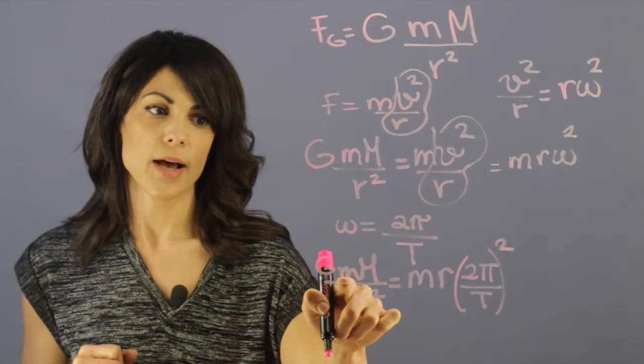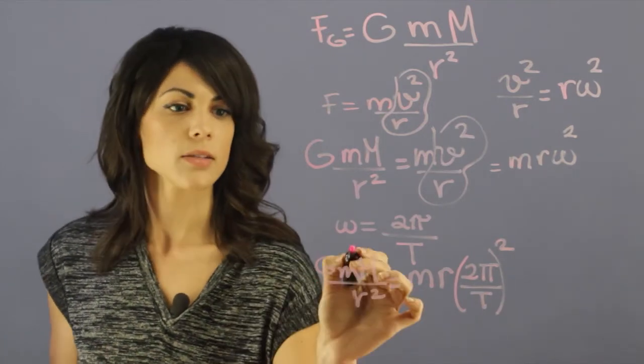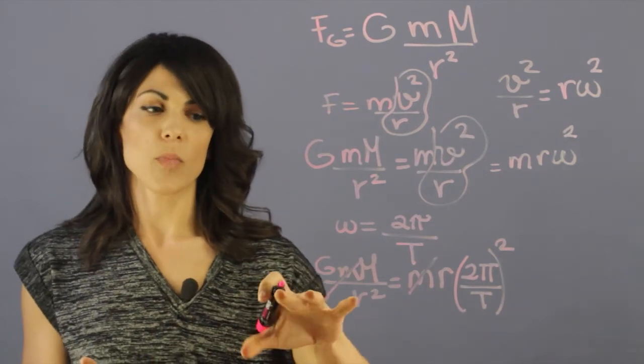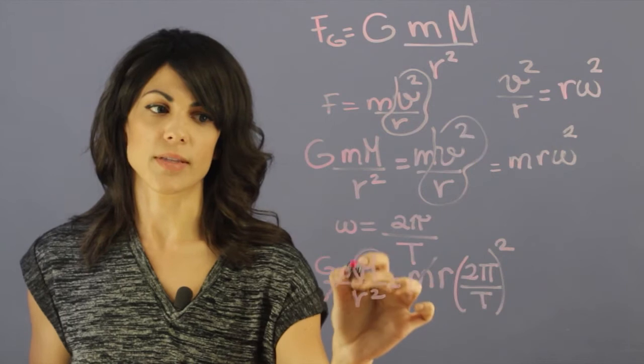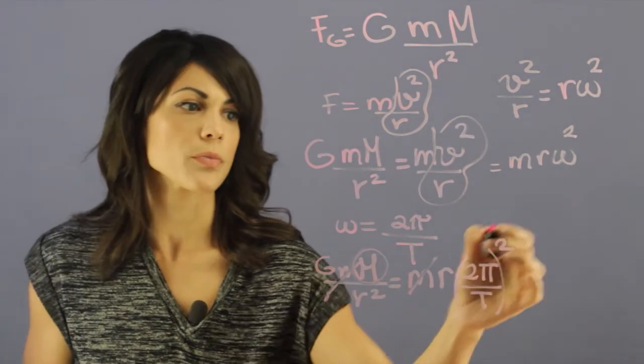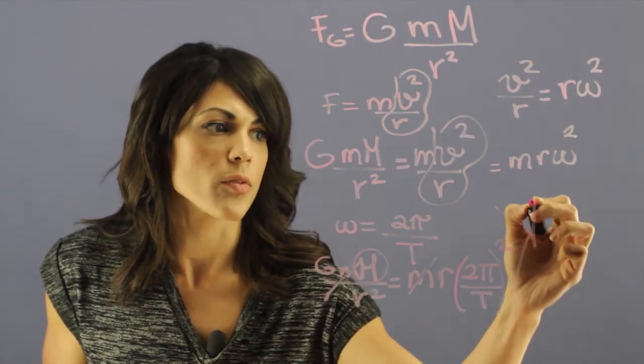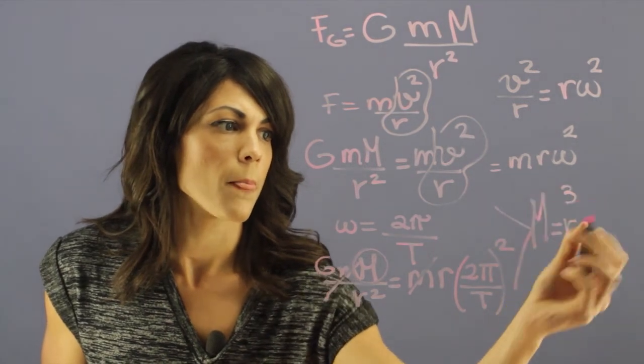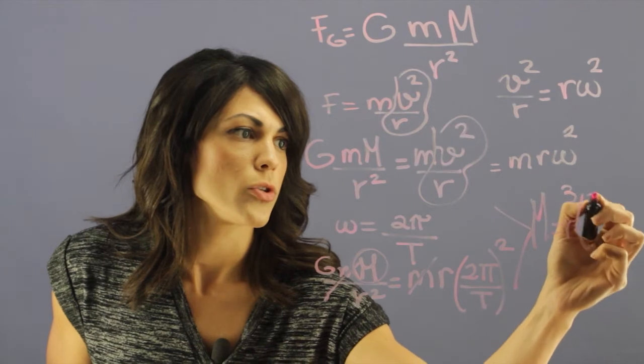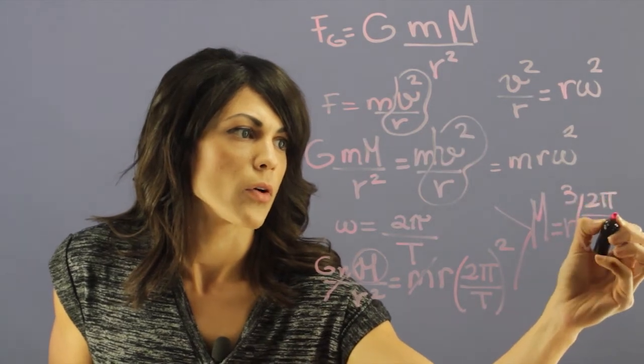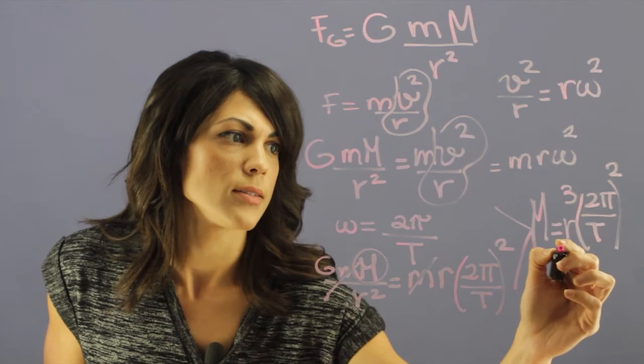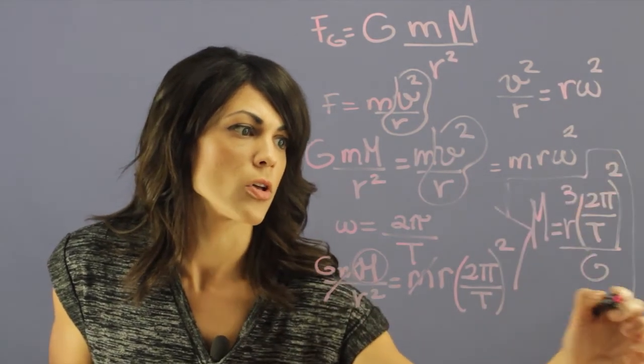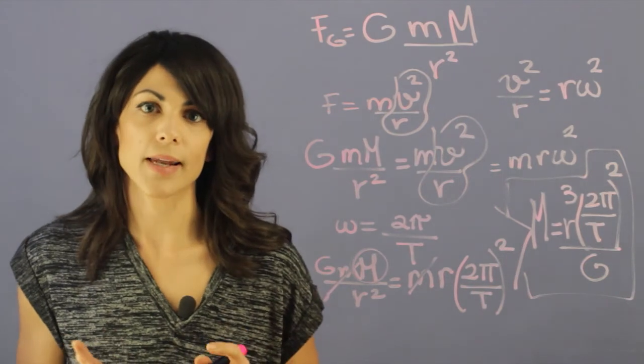Now as you can see we have the mass of the moon on both sides and we can cancel this out. Now let's move everything together and solve for this M. This M is what's crucial. So if we put all of this together, the mass of the planet is equal to r cubed times 2 pi over the period squared divided by the gravitational constant. And this is your equation for finding the mass of the planet that has a moon.